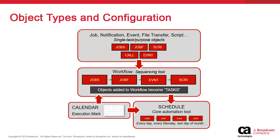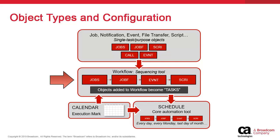This is what a very simple AA configuration might look like. First, we build our single-purpose objects like jobs, file transfers, notifications, and scripts. Then we chain these objects in logical sequences called workflows, so as to make them execute in a specific order.